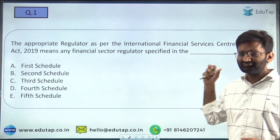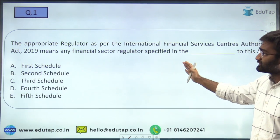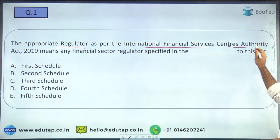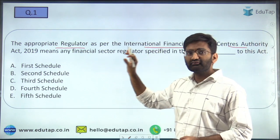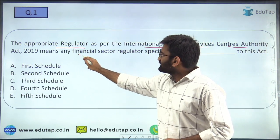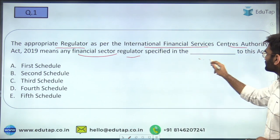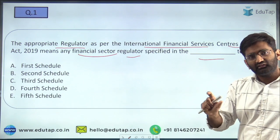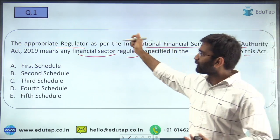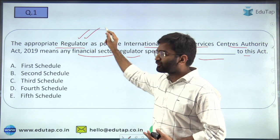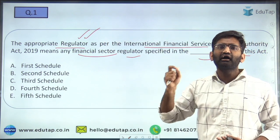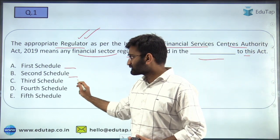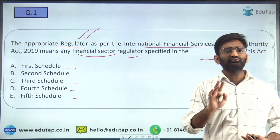The first question says: the appropriate regulator as per the International Financial Services Centers Authority Act (IFSCA Act) 2019 means any financial sector regulator specified in the dash to this Act. We have to pick which schedule of this Act lists the appropriate regulators along with the laws related to each regulator. The options are: First Schedule, Second, Third, Fourth, and Fifth. There are only two schedules in the IFSCA Act.